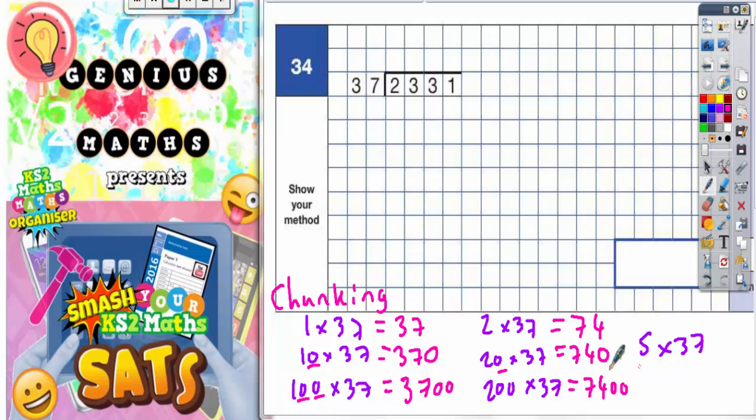The only other one we need is 5 times 37, which is going to be half of 10 times 37. If we half 370, half of 300 is 150 and half of 70 is 35. Add those together and you get 185, so 5 times 37 is 185.